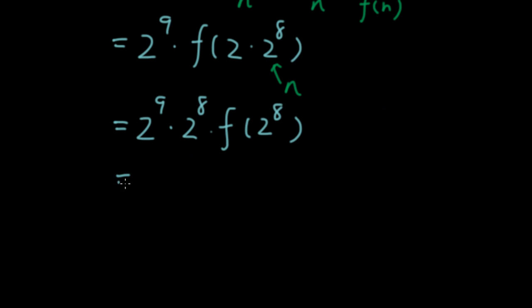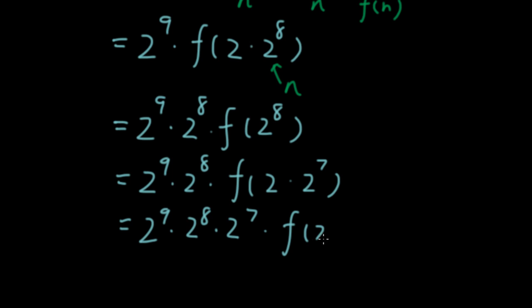Let's go one more step. This is equal to 2^9, 2^8 times f of 2 times 2^7. And then we can bring out the 2^7. Now we can keep going until we have just 2 in the parentheses.